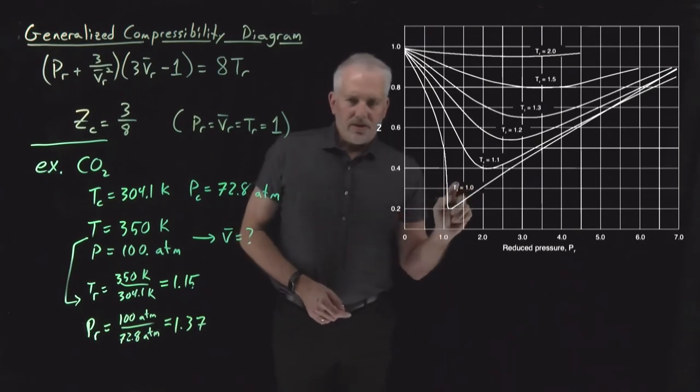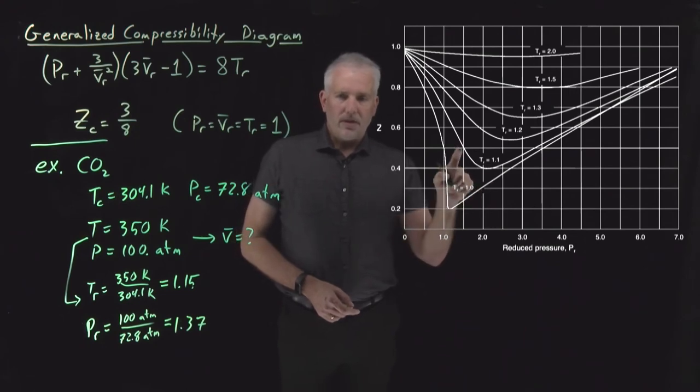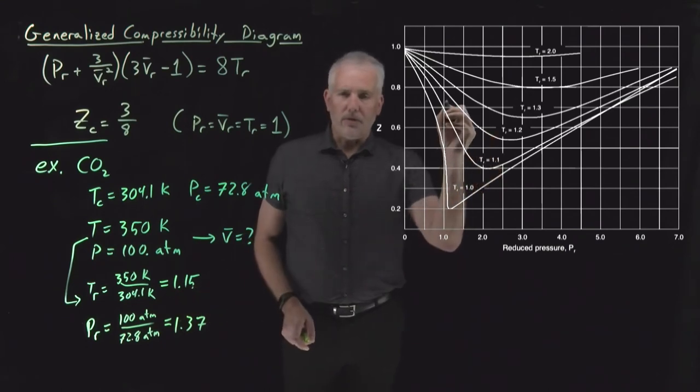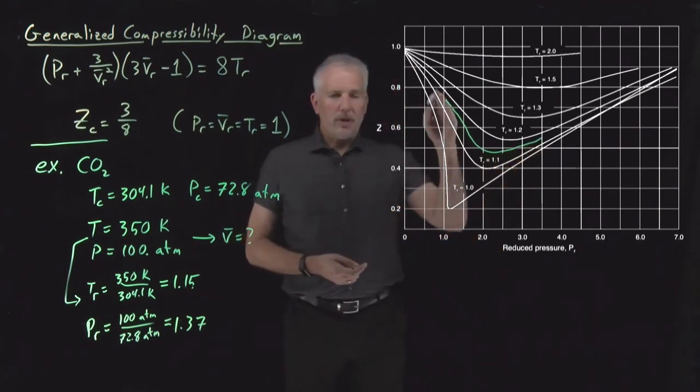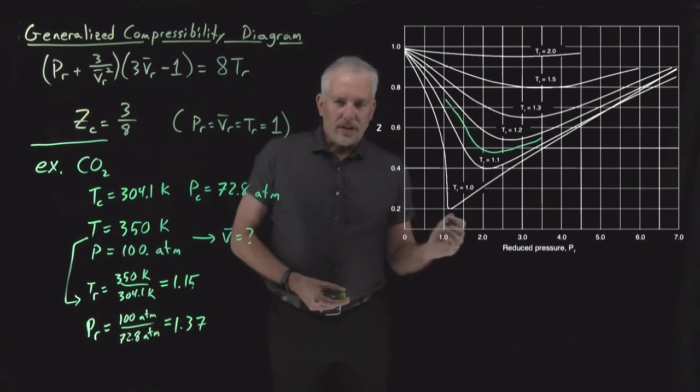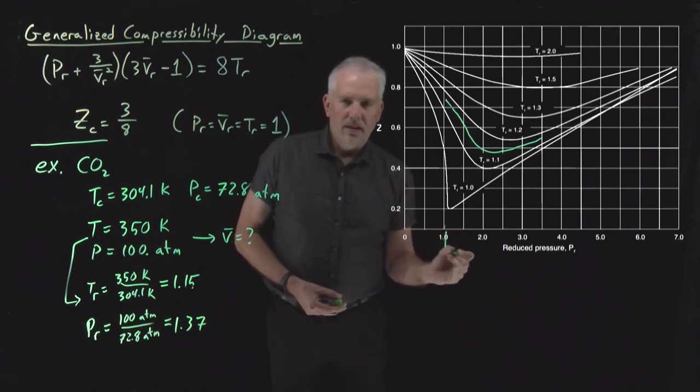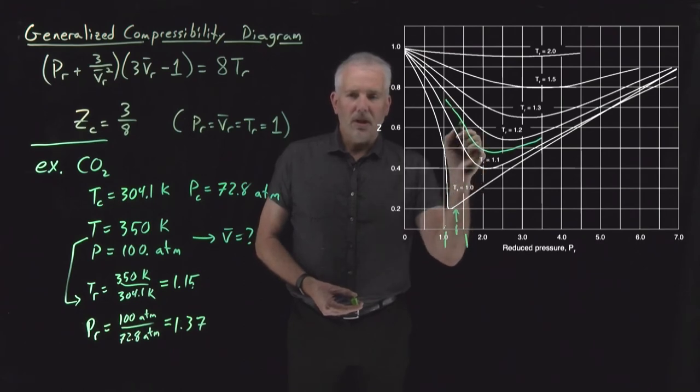So this is the critical isotherm, the isotherm at a reduced temperature of 1.1. This is the isotherm at a reduced temperature of 1.1. Here's 1.2. We're interested in 1.15. So that would be a curve that we'll have to interpolate it in our minds, but that would be a curve that is somewhere in between, roughly halfway between the 1.1 and the 1.2 curves. Likewise, the reduced pressure of 1.37. So here's 1, here's 1.5. 1.4 is going to be roughly here.